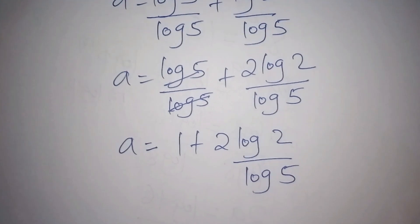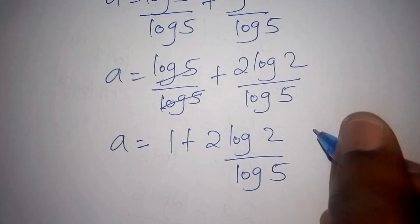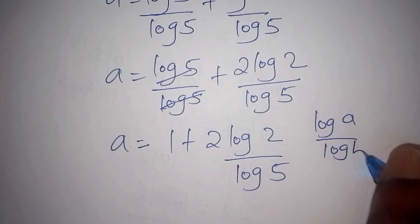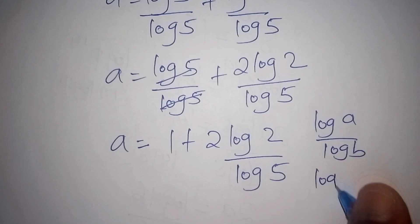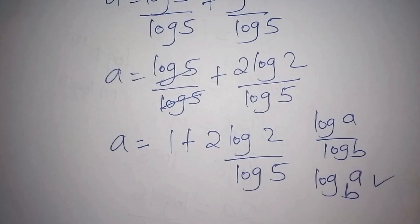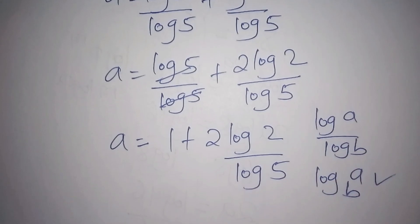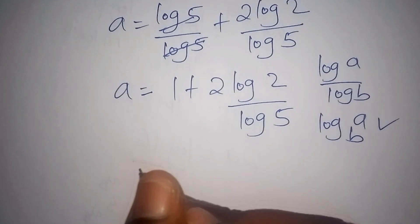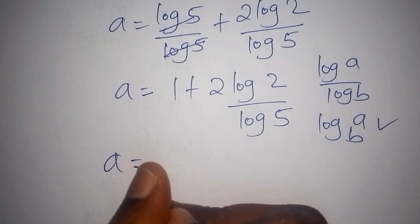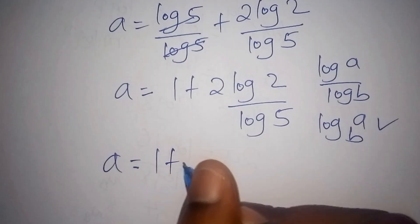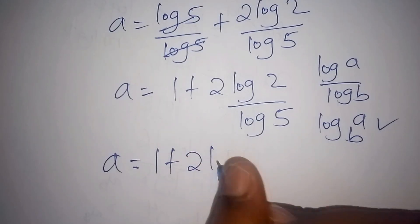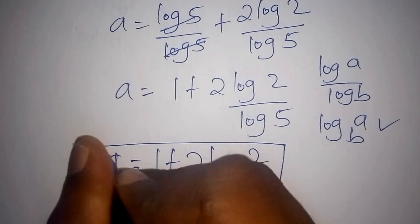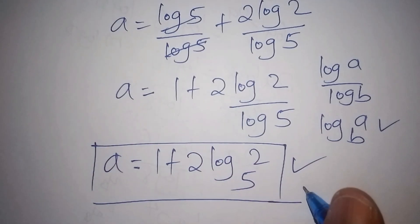Recalling that log A over log B can be written as log of A to the base of B, we can conclude that our value for A is equals to 1 plus 2·log of 2 to the base of 5. This is our correct answer.